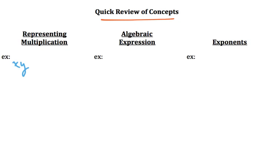In this quick review of concepts, there's many different ways that we can represent multiplication. The 'ex:' with the colon after it stands for examples. In pre-algebra, you would have known that if you saw something like xy, you would be multiplying the variable x times y. So if x were 2 and y were 3, it would equal 2 times 3, or 6.